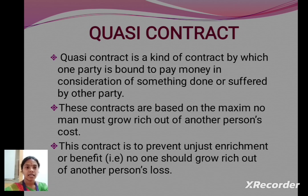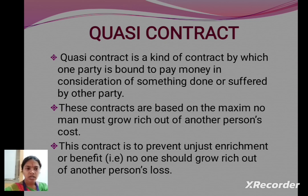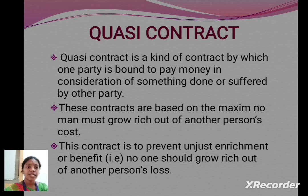Quasi-contract: A quasi-contract is a kind of contract by which one party is bound to pay money in consideration of something done or suffered by the other party. These contracts are based on the principle that no man must grow rich out of another person's cost. This contract is to prevent unjust enrichment or benefit — that is, no one should grow rich out of another person's loss.